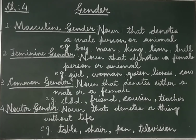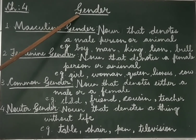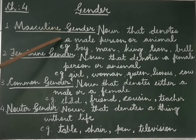Good morning children. Today we are going to study chapter 4 from your English grammar book, page number 20, and the name of the topic is gender. In English grammar, we have 4 different kinds of genders.